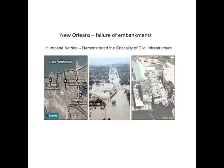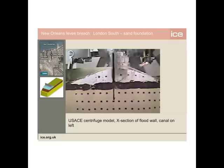The simple infrastructure in this case was something like this — this is a model of one of the embankments. The canal is to the left, and it's in a part of New Orleans called London South. This model is in a centrifuge, actually built on its side. They swing it round and round to replicate the effects of gravity at scale, because a small model won't fail on its own. As it goes round, they start to fill up the canal with water — you'll see the water on the left-hand side rise until something happens.